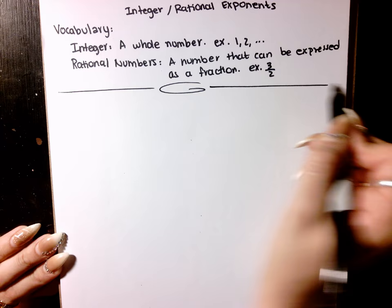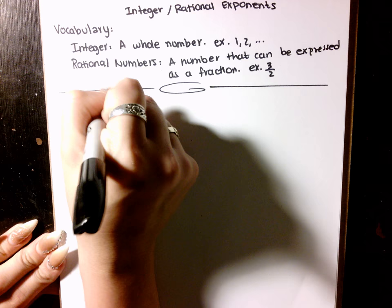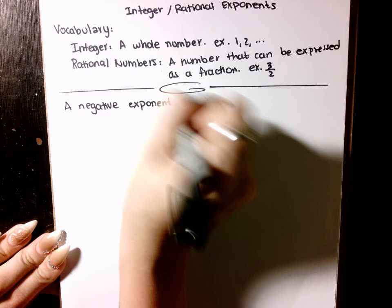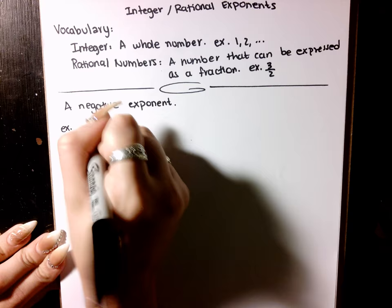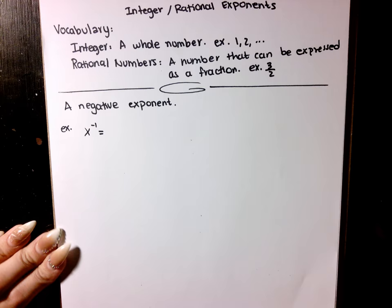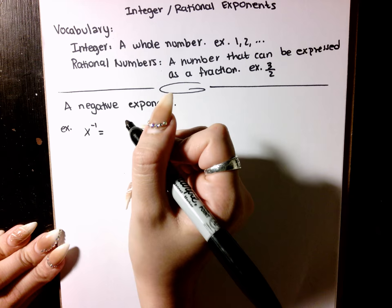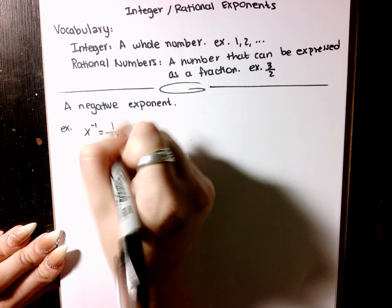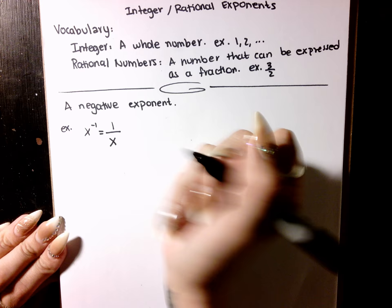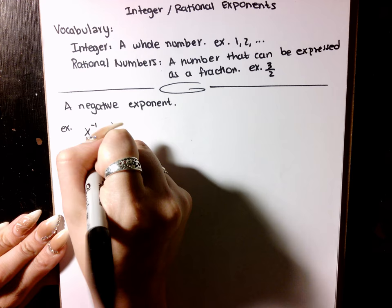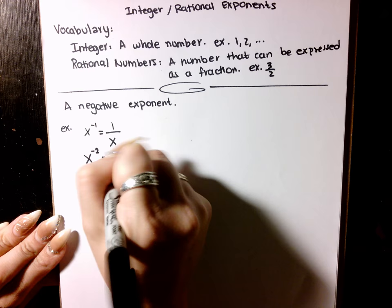Let's start with exponents that are integers, specifically focusing on negative exponents. So what happens when you have a negative exponent? If you have x raised to the negative one, that just means we're going to make it into a fraction — it's one over x. Whenever you have a negative as an exponent, it means fraction. Another example: if I have x raised to the negative two, that's the same thing as one over x squared.